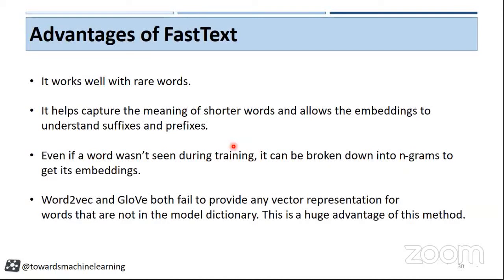It cannot capture representation for that word, but FastText model will capture representation for unknown words also. This is how n-grams are implemented to improve the model.